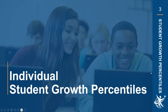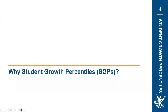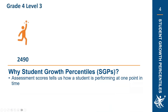We're going to start with individual student growth percentiles — how they are calculated and what they mean. Let's imagine a student in grade four at level three, or meeting standard, on the Smarter Balanced Assessment in English Language Arts. They earned a score of 2490.